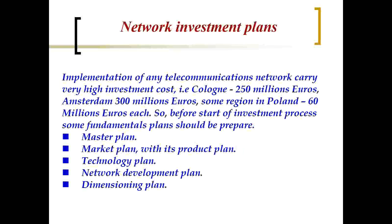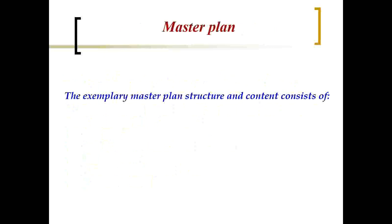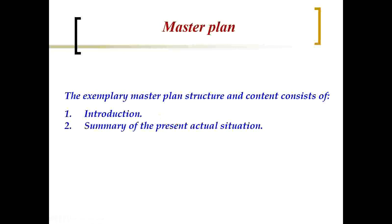Here in detail we can read about the master plan. The exemplary master plan structure and content consists of, first of all, the introduction — where you're going to describe the existing situation of the region or place where you're planning to put your network, and a summary of the present and actual situation.